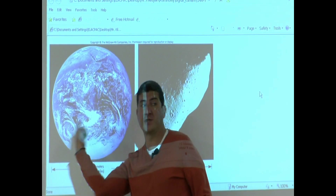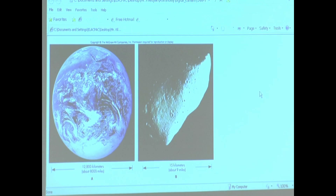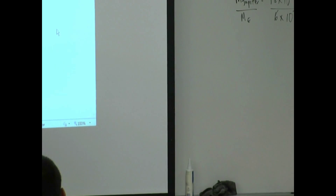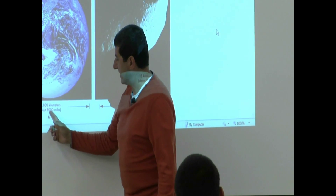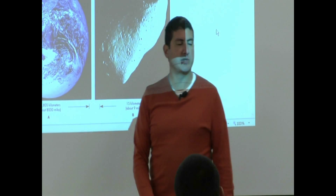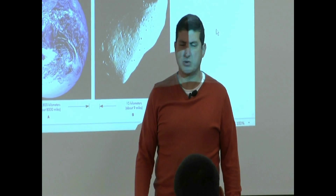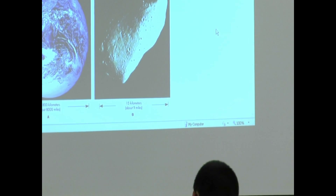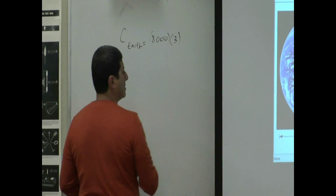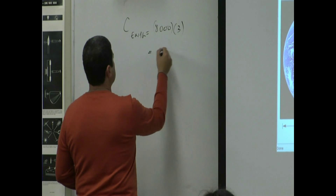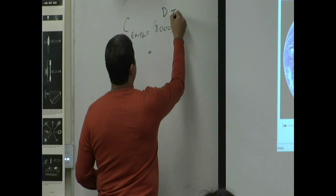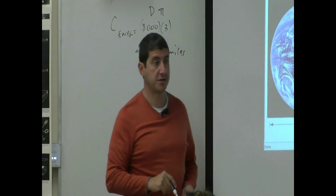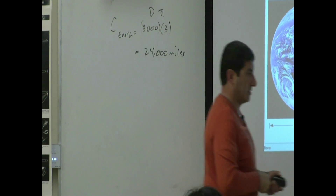If I wanted to know the circumference of the Earth, what would that be? You multiply the diameter by pi — by 3.14. So if the diameter of the Earth is about 8,000 miles, the circumference would be 8,000 times pi. I'm approximating pi as 3, so roughly the circumference of Earth is about 24,000 miles. Quite a big distance.